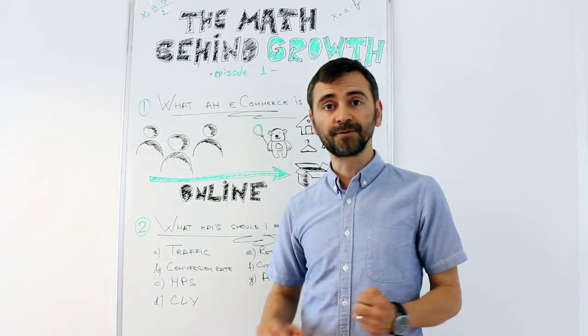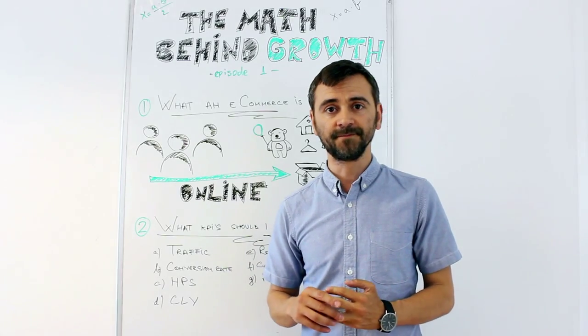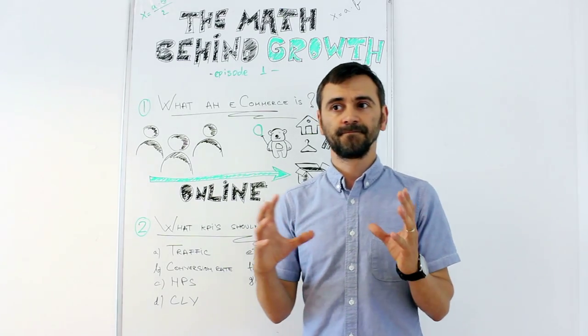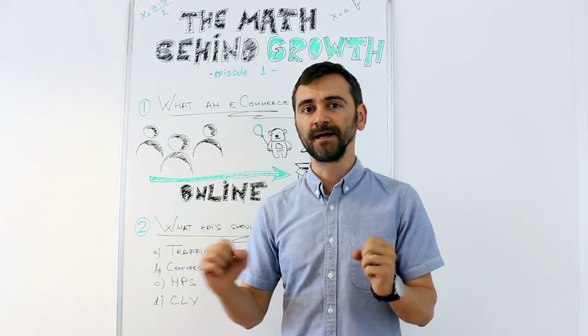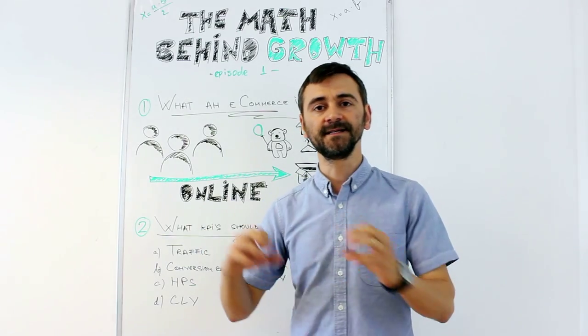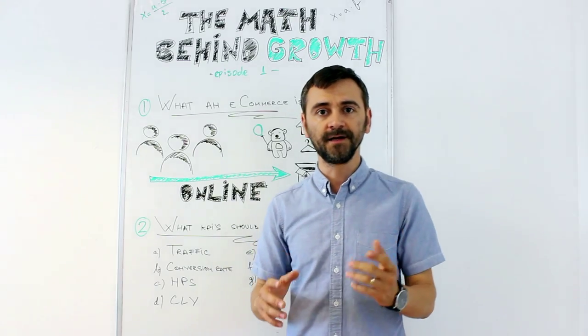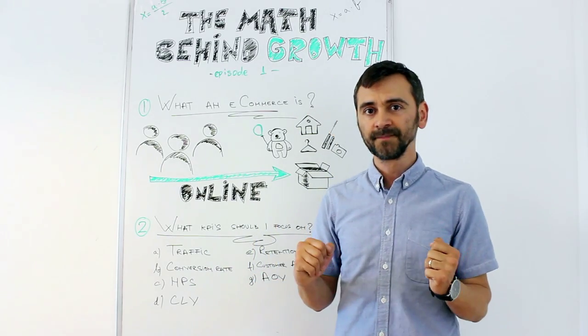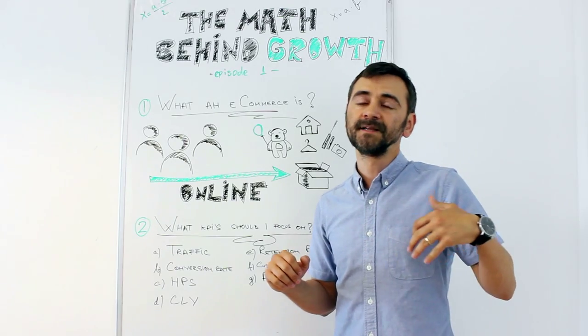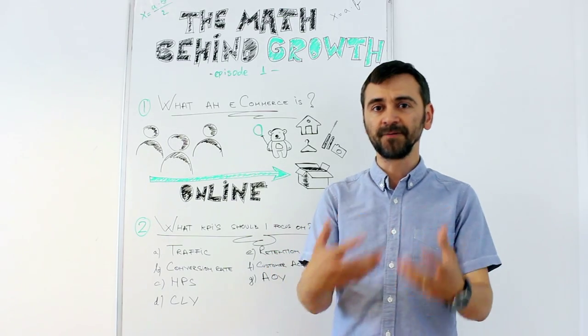Third is the net promoter score. This is a very important metric which is mainly sounding like this: Which are the chances from 0 to 10 to recommend us to a colleague or relative or friend? So that means the satisfaction but also the amplification.